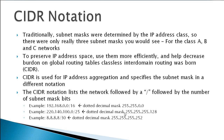A /30 means the first 30 bits of the subnet mask are all ones, which gives you 255.255.255.252.